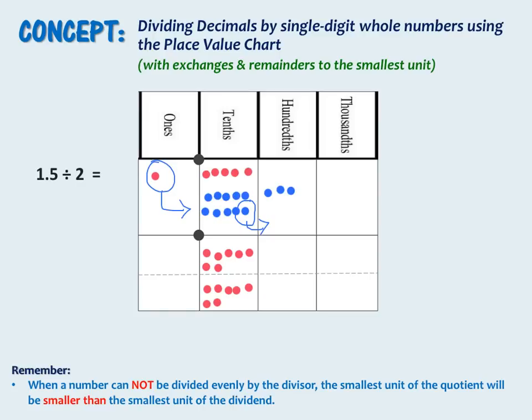When we unbundle we make 10 hundredths. Now we have 10 hundredths that we need to divide into 2 equal groups, and we know that 10 divided by 2 is 5. Now let's find our answer — our answer is always what one group has. There are 7 tenths and 5 hundredths, so our answer is 75 hundredths.